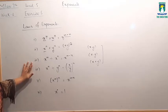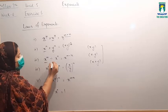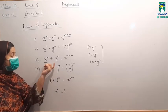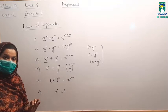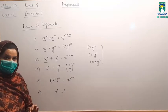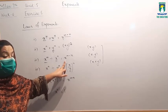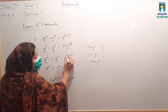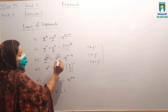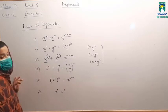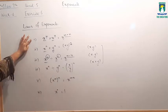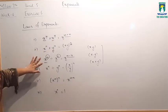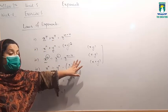Third law: अगर आपके पास base सेम है, जैसे यहाँ भी x है और यहाँ भी x है, और divide हो रहे हैं, तो उनकी powers minus होती हैं. So x raised to power m divided by x raised to power n will be equal to x raised to power m minus n. Base को one time लिखना है, powers minus करनी हैं. First law में multiply था तो powers add; third law में divide है तो powers minus.